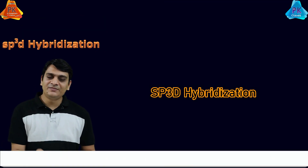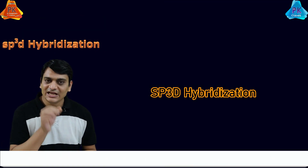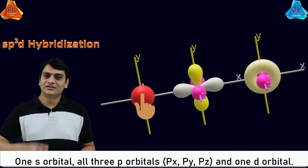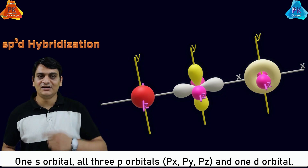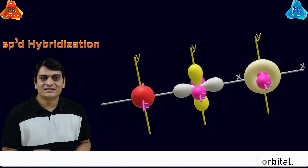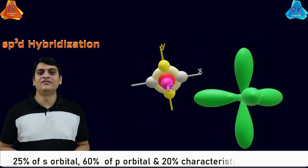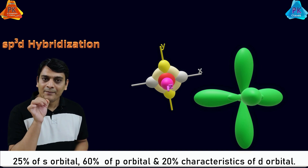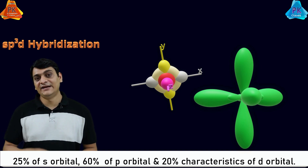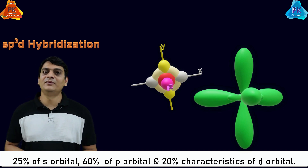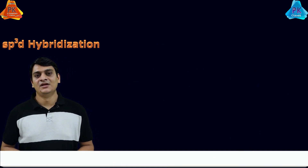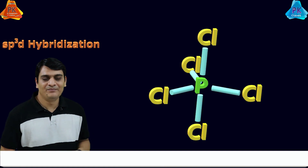If we are talking about sp3d hybridization, as its name suggests it contains one s orbital, three p orbitals, and one d orbital. It means the contribution of the s orbital will be 20%, the contribution of the p orbital will be 60%, and the contribution of the d orbital will be again 20%.